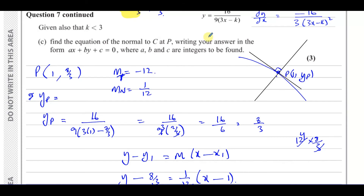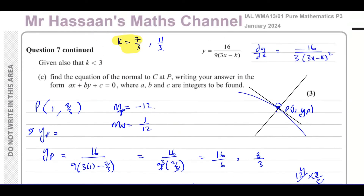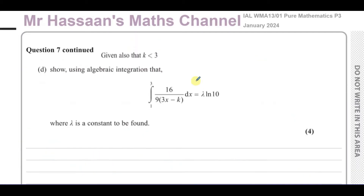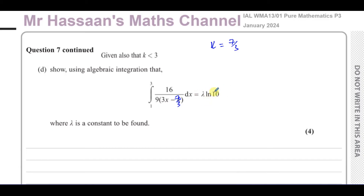Now on to part D. Given also that k is less than 3, so still using k equals 7 over 3, the question says: show, using algebraic integration, that the integral between 1 and 3 of 16 over 9 times (3x minus 7 over 3) dx equals lambda times ln 10, and find the value of lambda.